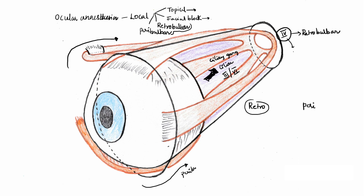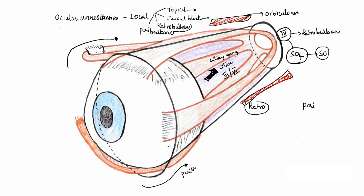Cranial nerve 4 supplies SO4 — that is the superior oblique muscle — so superior oblique is not paralyzed. We also have another muscle outside the muscle cone: orbicularis oculi, which is supplied by cranial nerve 7. Because it lies outside the muscle cone, cranial nerve 7 is also not blocked. So cranial nerves anesthetized by retrobulbar block are CN 2, CN 3, and CN 6 — while CN 4 and CN 7 are not.